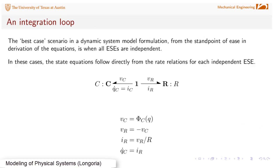Something we can call an integration loop is the best case scenario. When you have a dynamic system model, from the standpoint of ease in the derivation of equations, if all the energy storage elements are independent, that makes life a lot easier. In this case, we would have integral causality on the C here.